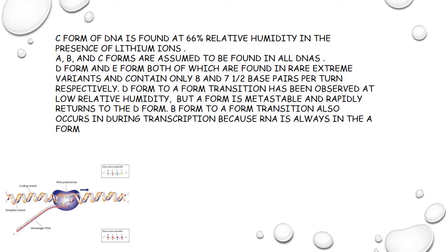C form of DNA is found at 66% relative humidity in the presence of lithium ions. A, B, and C forms are assumed to be present in all DNAs. D form and E form are both found in rare extreme variants, containing only 8 and 7.5 base pairs per turn respectively. D form to A form transition has been observed at low relative humidity, but the A form is metastable and rapidly returns to the D form.